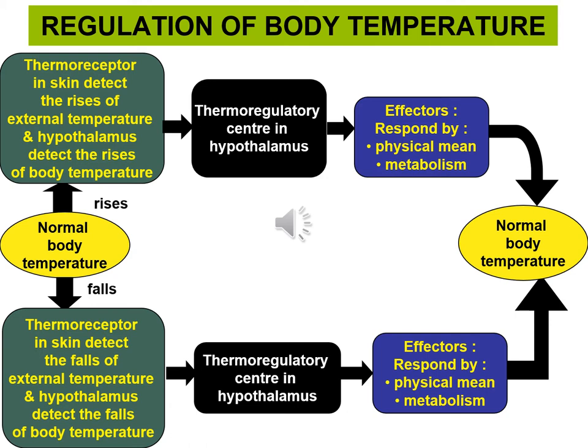Carta ini menunjukkan tentang apabila suhu badan kita meningkat. Ada dua reseptor yang akan mengesan: iaitu thermoreceptor dekat kulit dan thermoreceptor dekat hipothalamus. Thermoreceptor di kulit akan mengesan suhu luar, iaitu suhu bilik. Manakala thermoreceptor dekat hipothalamus akan mengesan kenaikan suhu dalam badan kita. Thermoreceptor ini akan hantar impuls pergi ke thermoregulatory center di dalam hipothalamus.